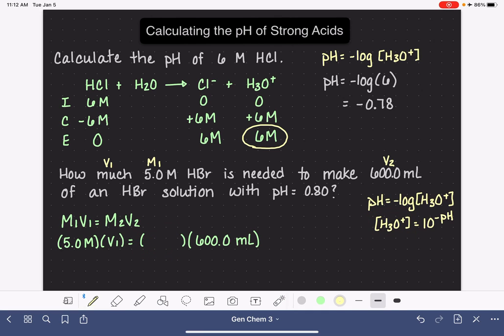Let's go ahead and solve for H3O+. H3O+ is 10 to the negative, our desired pH is 0.8, 10 to the negative 0.8, which is 0.158 molar.